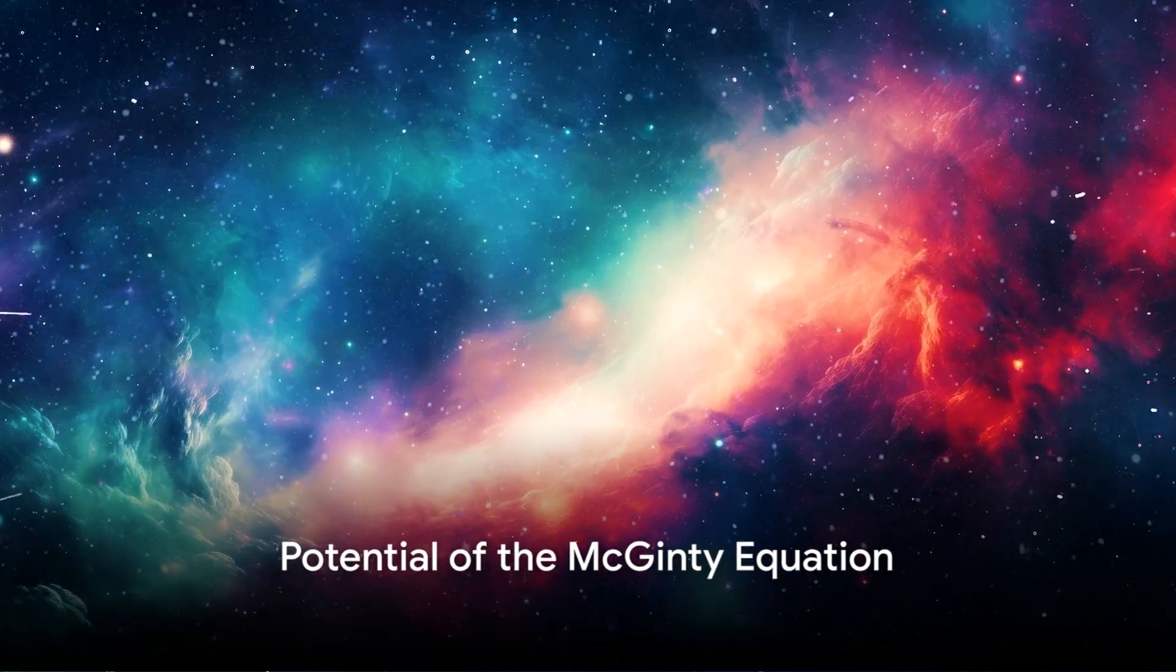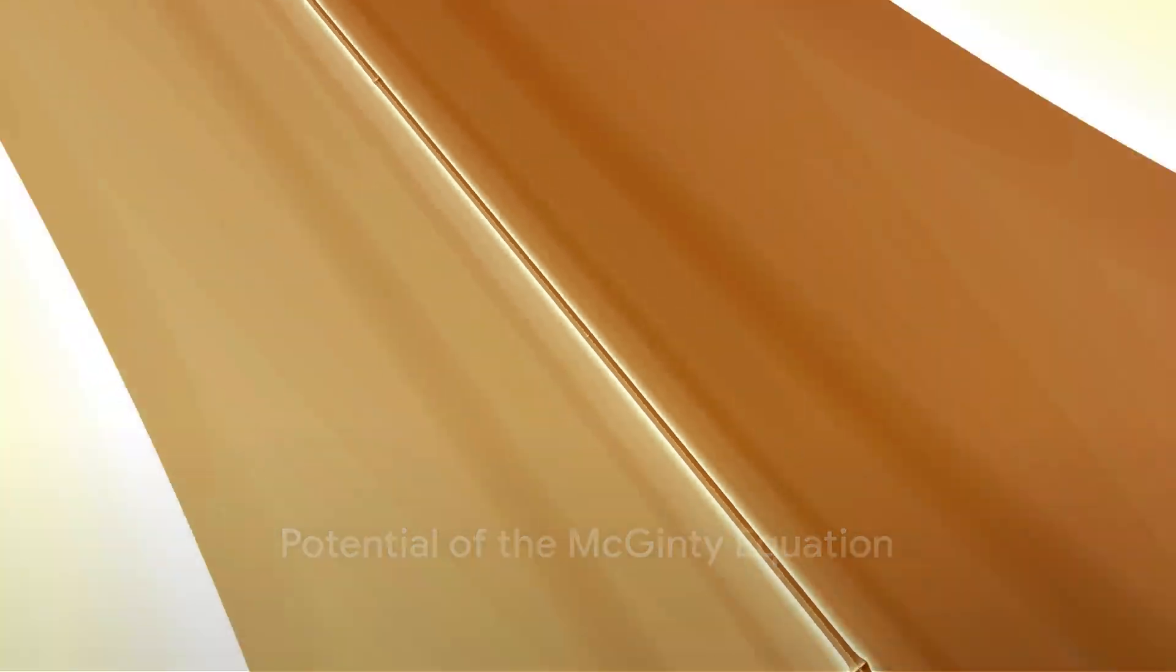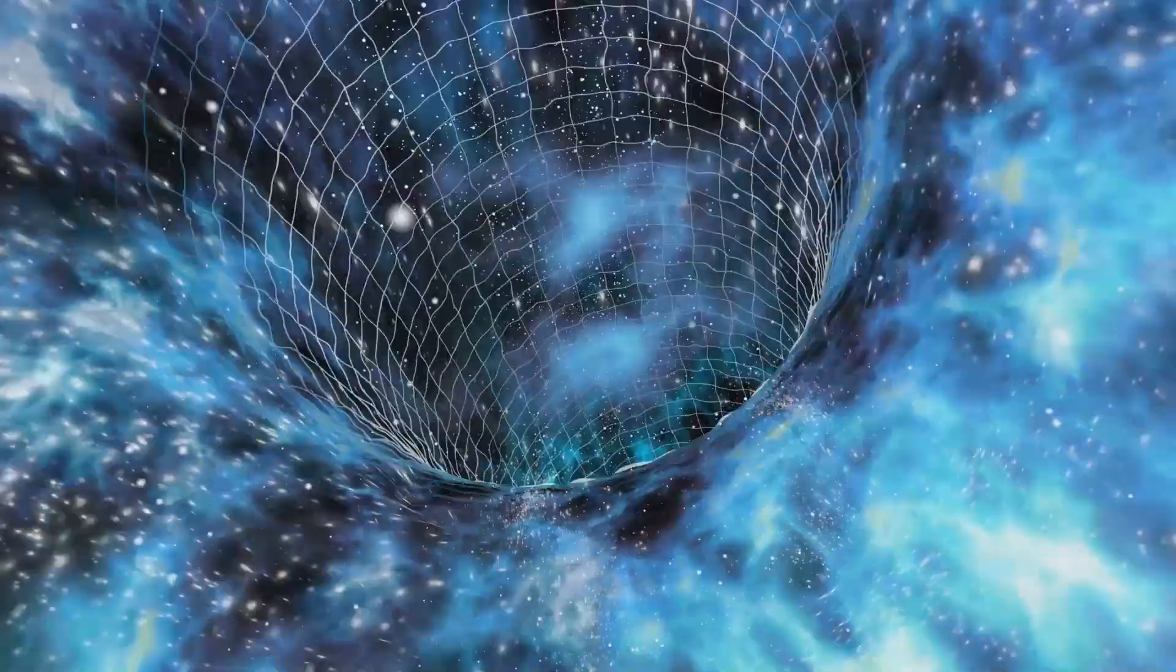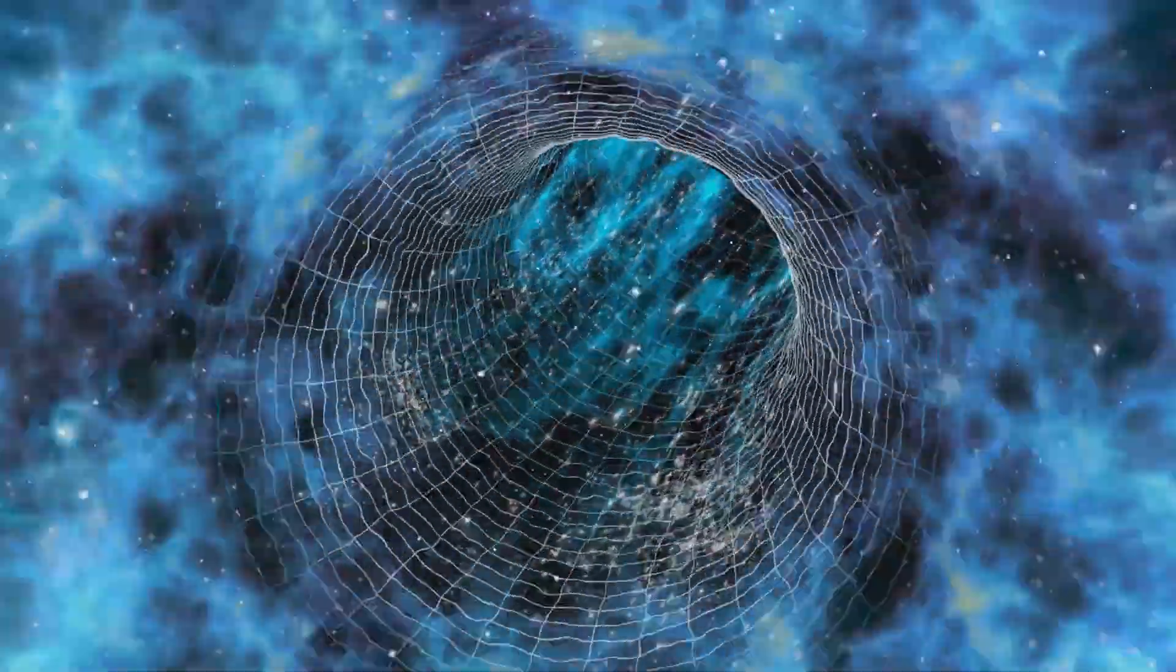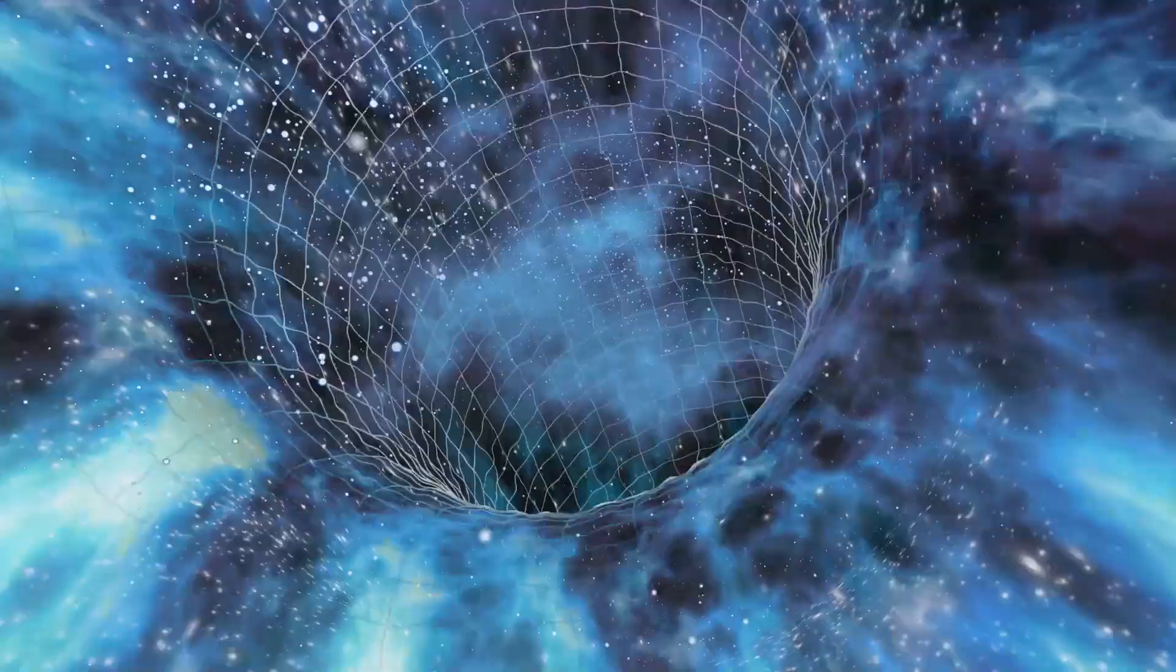But the magic of the McGinty equation doesn't stop there. By manipulating these fractal structures, it's believed that the equation could potentially create stable micro-wormholes. Imagine that: wormholes that could possibly enable faster-than-light travel and communication, opening a whole new frontier in space exploration.